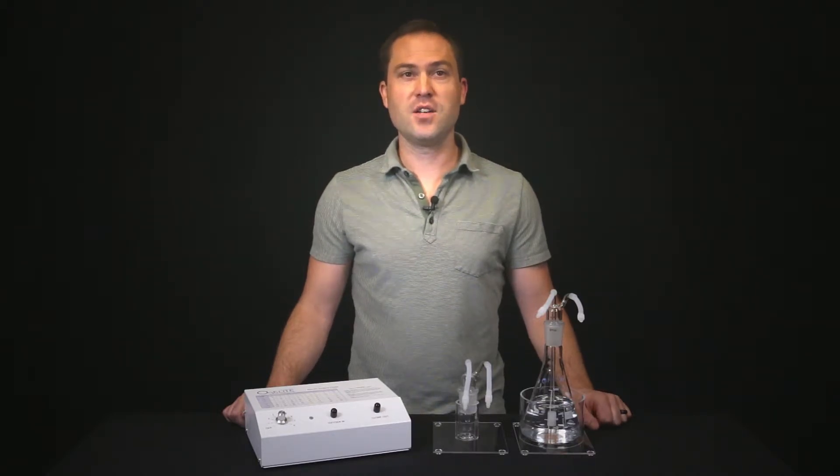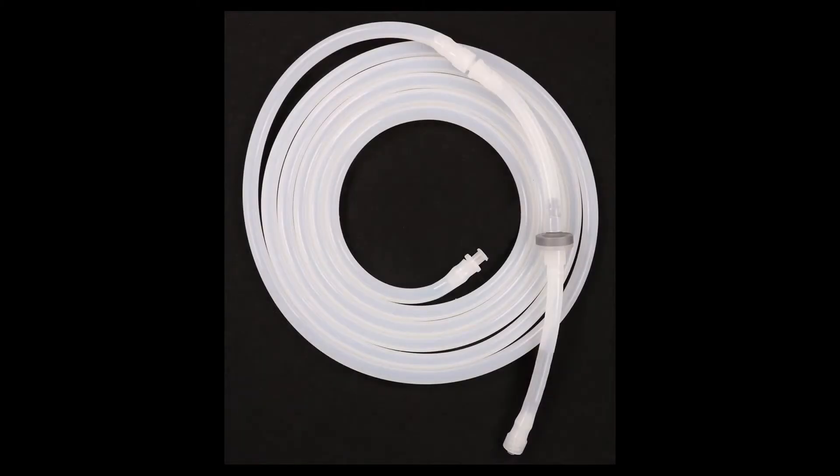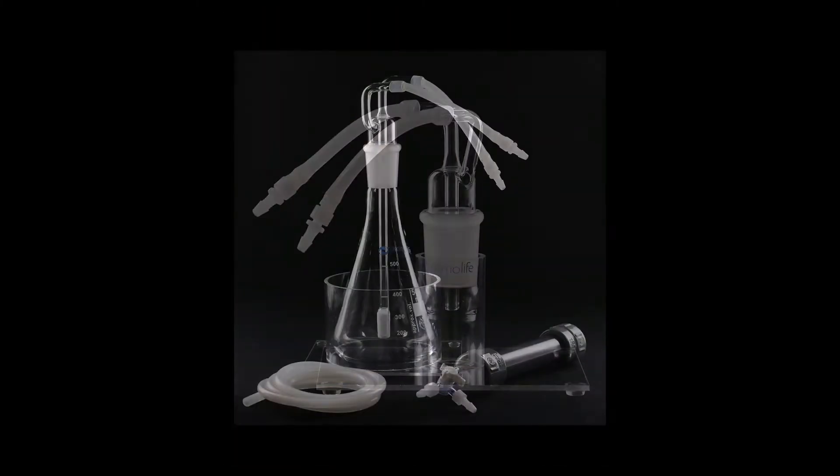To begin, make sure you have all the accessories needed. These include our O3 Elite Mini, Single or Dual Ozone Generator, tubing with a check valve, an ozone trap, an ozone water bubbler humidifier, and silicone tubing.